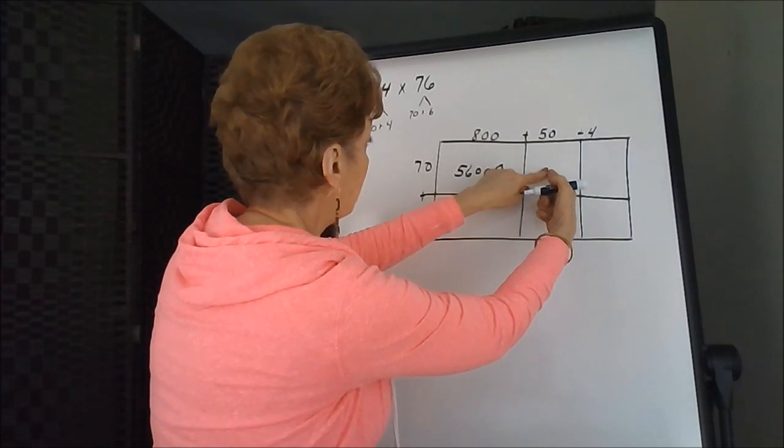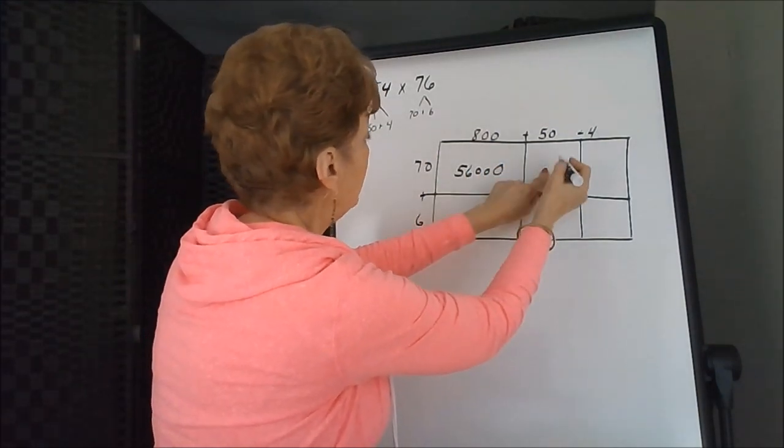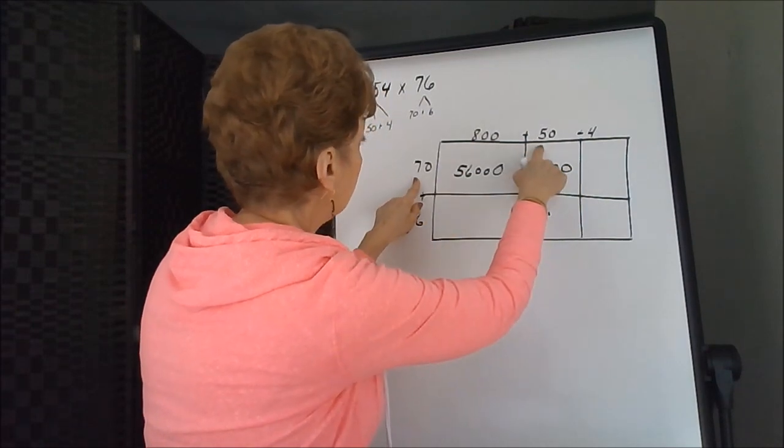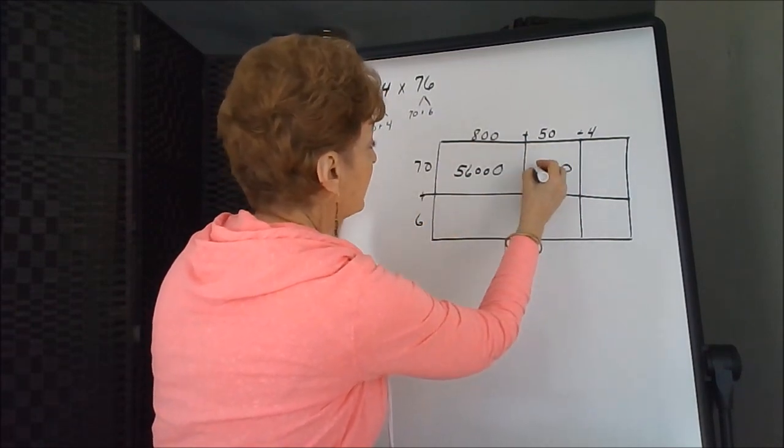In this box right here, we've got two zeros, one on the 70 and one on the 50. And now we can just multiply the 7 times 5 is 35.